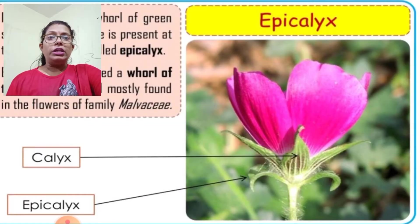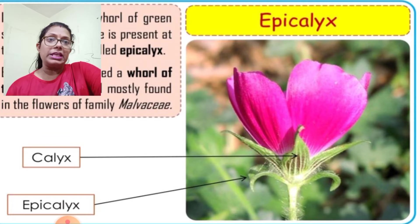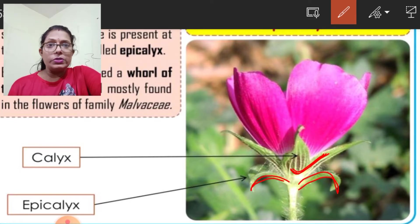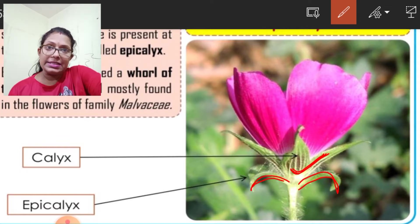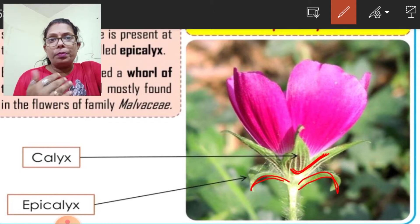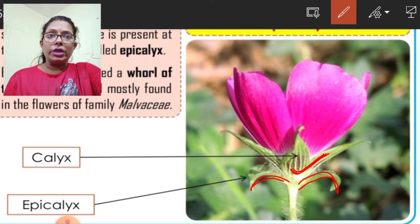Next is the epicalyx. Epicalyx is a green structure that looks similar to sepals, found at the base of the calyx. These small, leaf-like structures emerge from the basal part of the calyx. Because in the bud stage these appear above the calyx, they are called epicalyx. The function of epicalyx is to provide protection to the flower in the bud stage, together with the calyx.